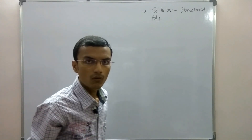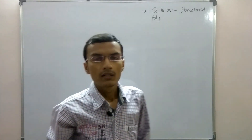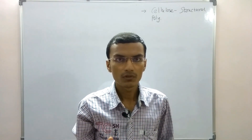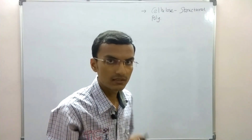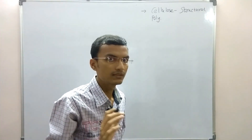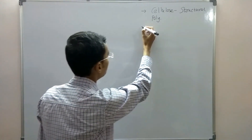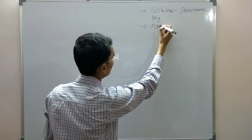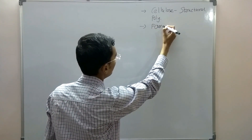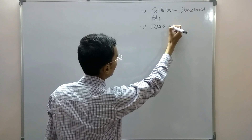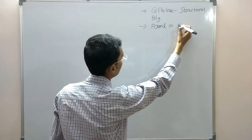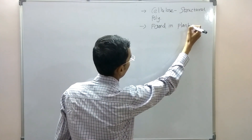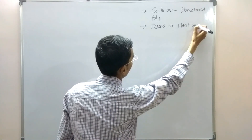Cellulose is found in the cell wall of plants. The cell wall of plants gives structural support to the plants, and that is why cellulose is known as a structural polysaccharide.